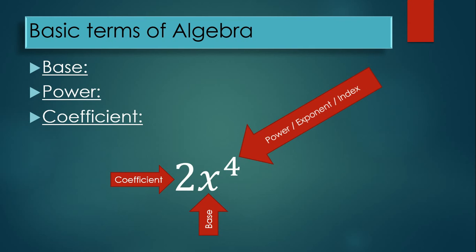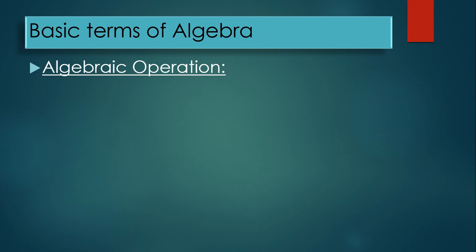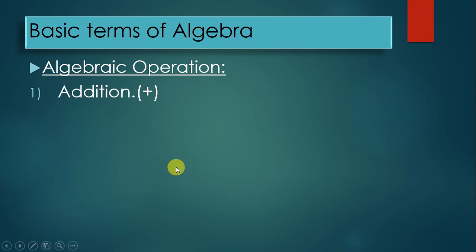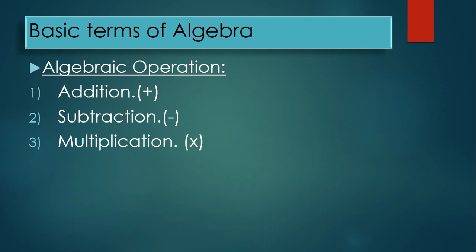The index (or power) is written as a superscript, while the coefficient is written as a subscript notation. Next, we look at basic algebraic operations. The basic algebraic operations are: first, addition; second, subtraction; third, multiplication; and fourth, division.